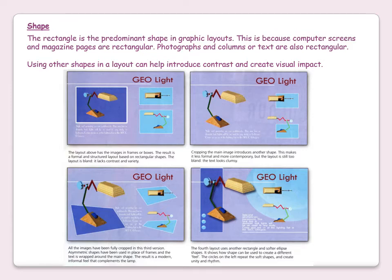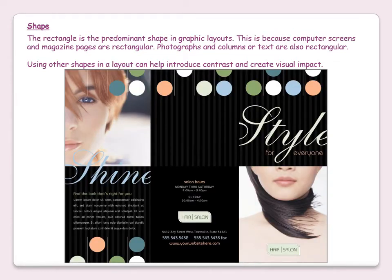In the third version, all the images have been fully cropped and asymmetrical shapes have been used in place of the frames, with the text wrapped around the image. The result is a modern, informal feel that complements the lamp. The fourth layout uses another rectangle and softer ellipse shapes, showing how shape can be used to create a different feel. The circles on the left repeat the soft shapes and create unity and rhythm. Rectangles form the pages of the leaflet, but to create contrast, circles of different colours have been used.